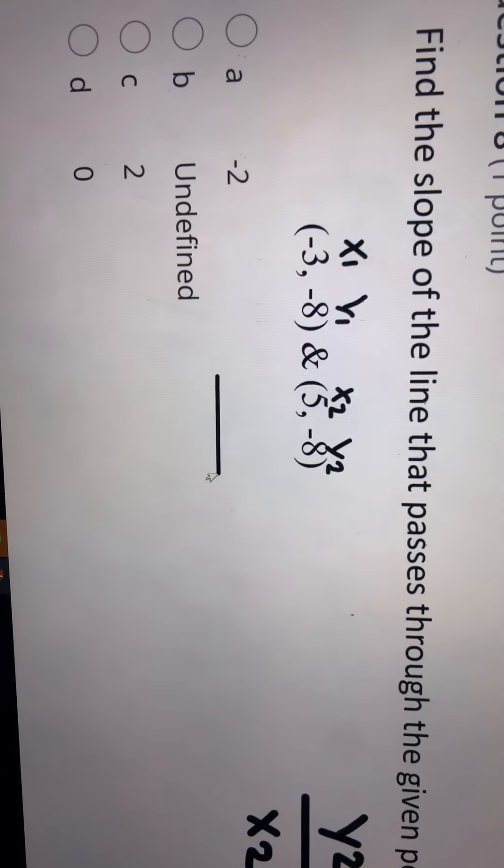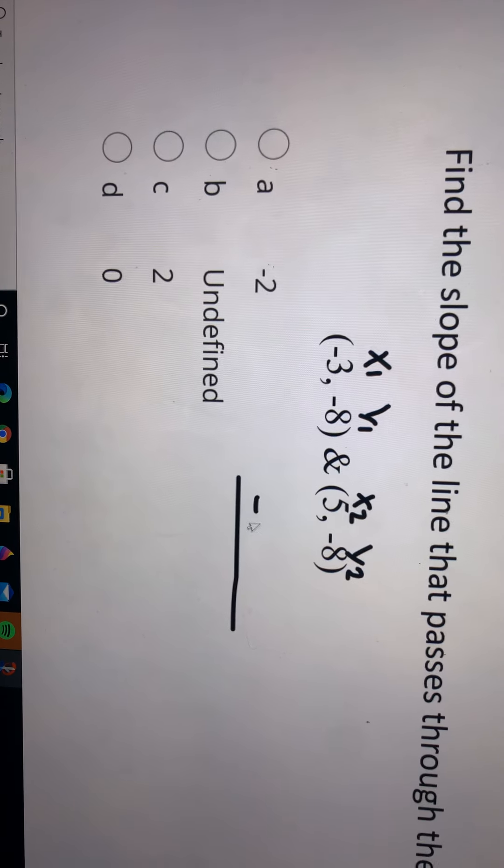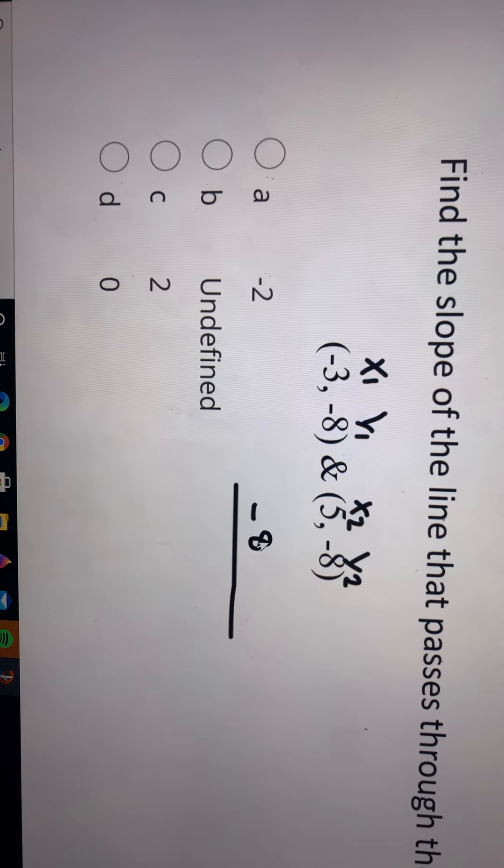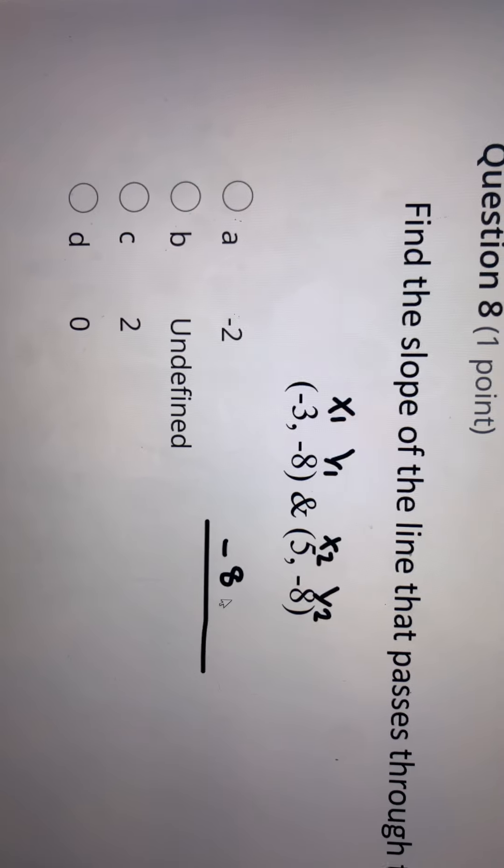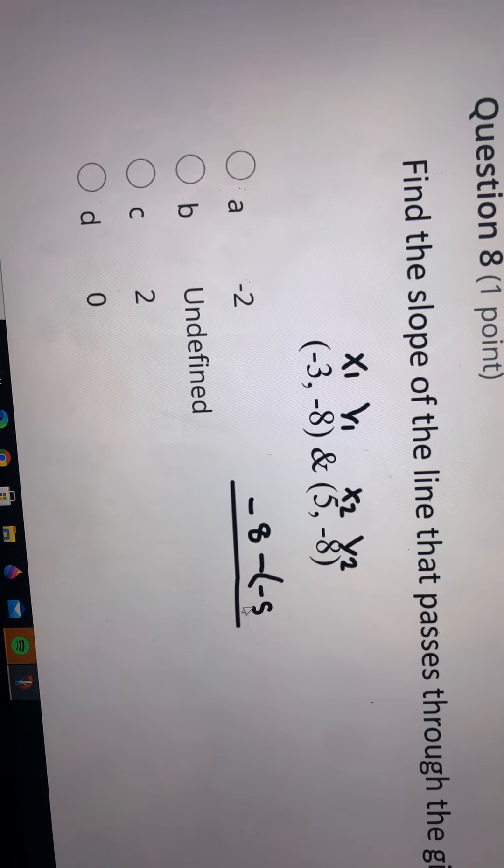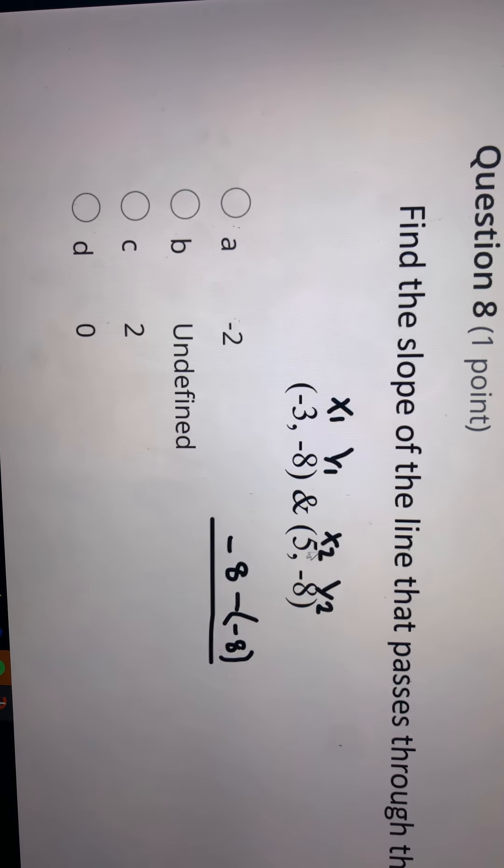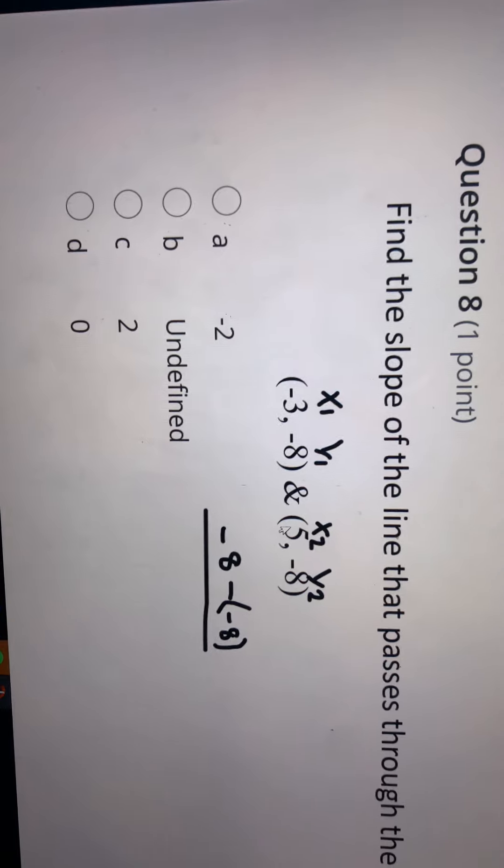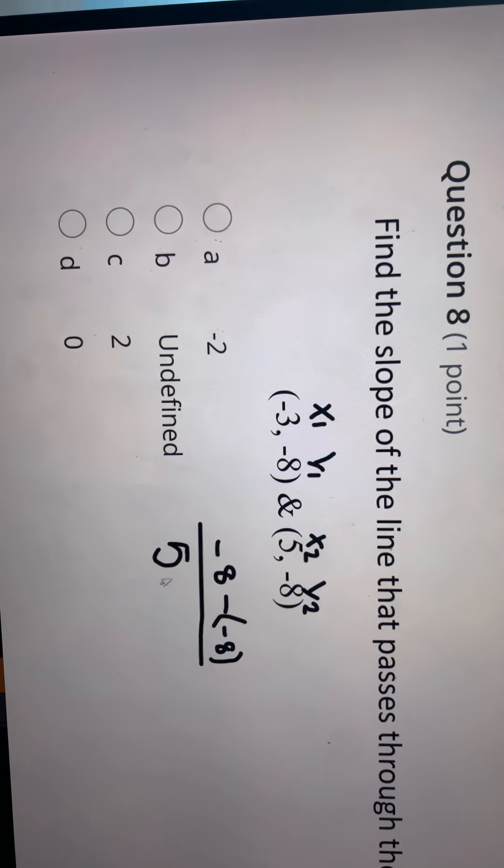Then you put your line. You're going to do negative 8 because that's what y2 is—y2 goes first—then minus y1, which is negative 8. Then you're going to do x2, which is 5 for me, minus negative 3.